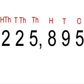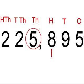Now, we will be looking at the number 225,895. The hundreds digit 8 is between 5 and 9, so we round up. The answer has to be 226,000.